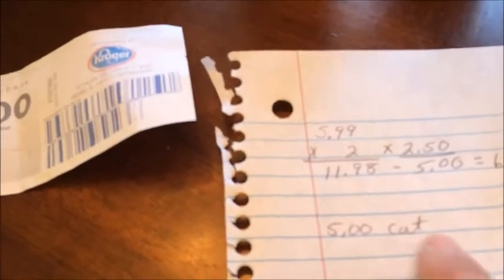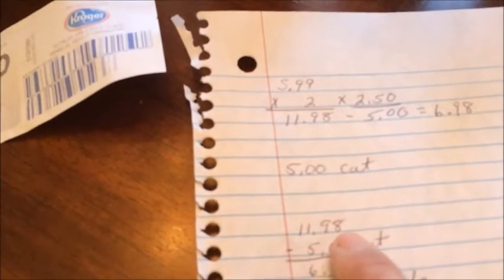Then the second, there's a Catalina right there, the second transaction, same thing. It was $11.98 minus the $5 Catalina, the $6.98, minus the two manufacturer coupons for $2.50, equals $5. So my total was $1.98.